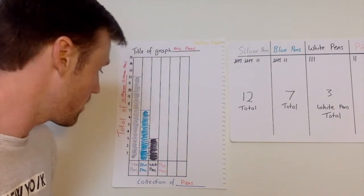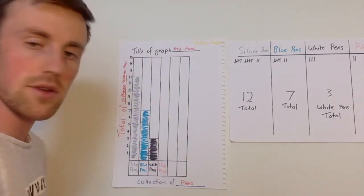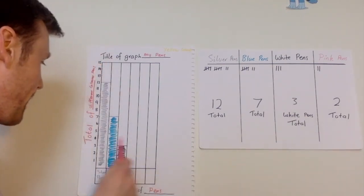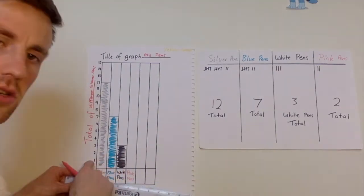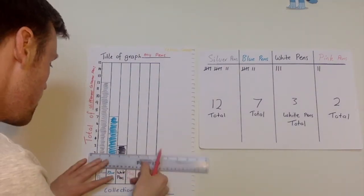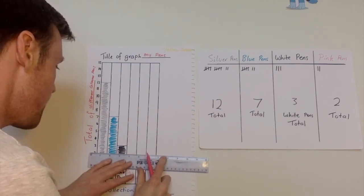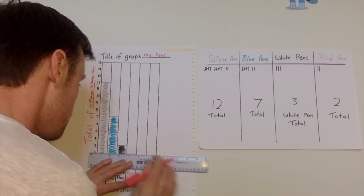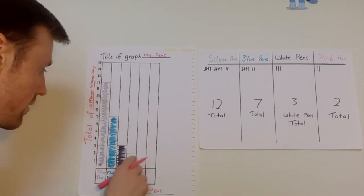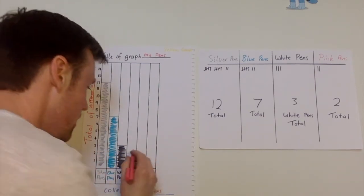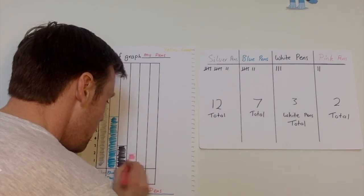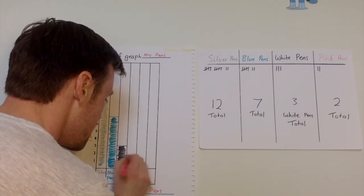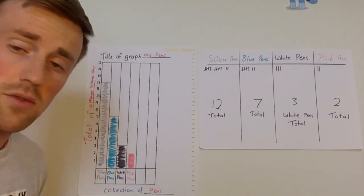Then for the last category, pink pens — find the total, which was 2. Grab your ruler and find 2 in the numbers. Put your ruler just slightly above it and draw a line in the next box. Make sure that line is nice and straight. There's my line — lined up with 2. Then I'll color that in later.